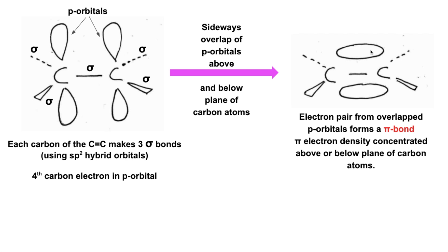The electron density of these pi electrons is concentrated above or below the plane of the carbon atoms because the original p orbitals had an upper lobe and a lower lobe.